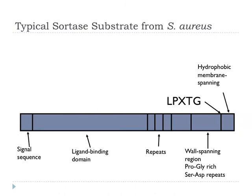Looking at the primary structure of a sortase substrate from Staph aureus, we see a signal sequence that targets it for secretion, a ligand binding domain — the bit actually interacting with fibronectin, fibrinogen and other matrix proteins — usually some repetitive areas, a part that spans the cell wall, and then this LPXTG motif. At the very end of the protein there tends to be a hydrophobic membrane-spanning region, which is actually cleaved off.